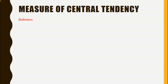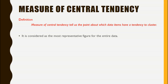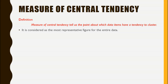The definition says that measure of central tendency tells us the point about which data items have a tendency to cluster. This means that to measure the central tendency of a sample data, we have to find out a single value such that all the data items of the sample tend to group around that value. This value will be considered as the most representative figure for the entire data. Measure of central tendency is also known as statistical average.